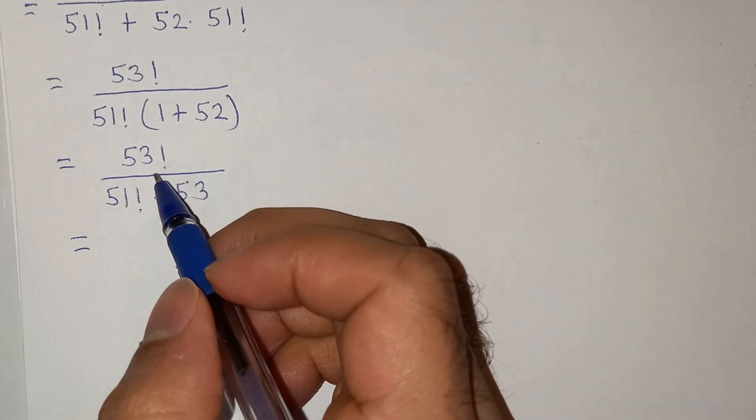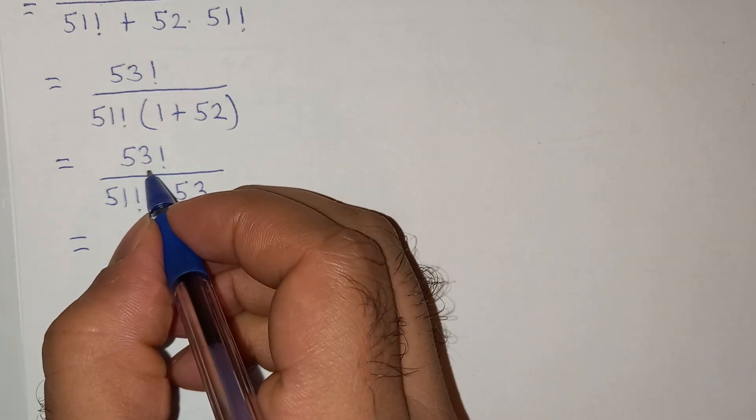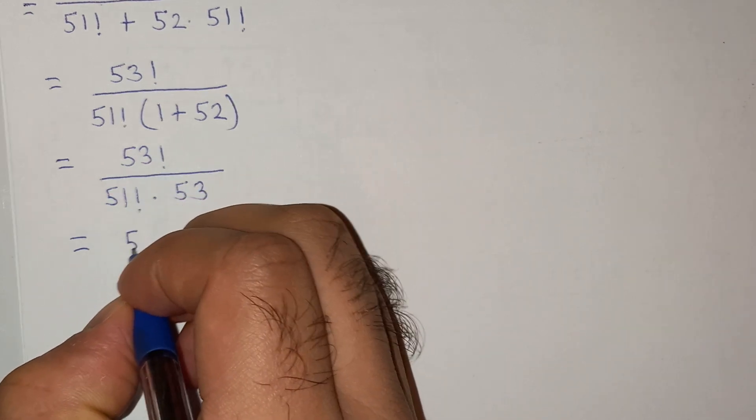So this will be equal to 53 factorial divided by 51 factorial multiplied by 1 plus 52, which is 53. Now let's try to rewrite this numerator in the form of denominator.